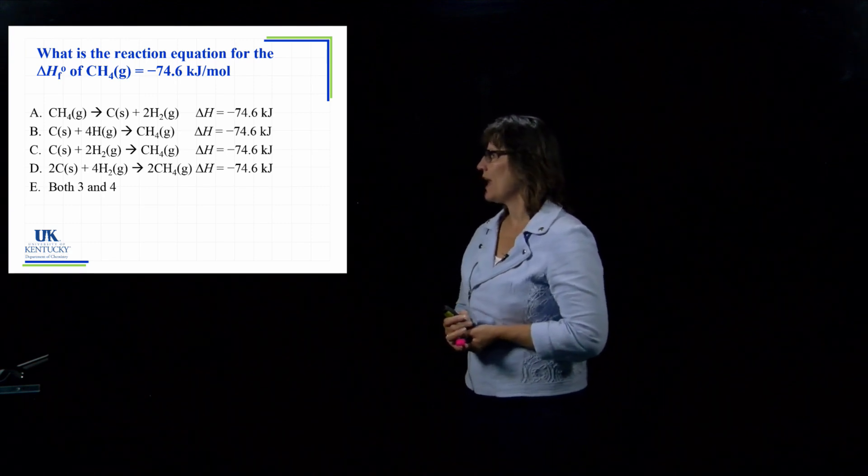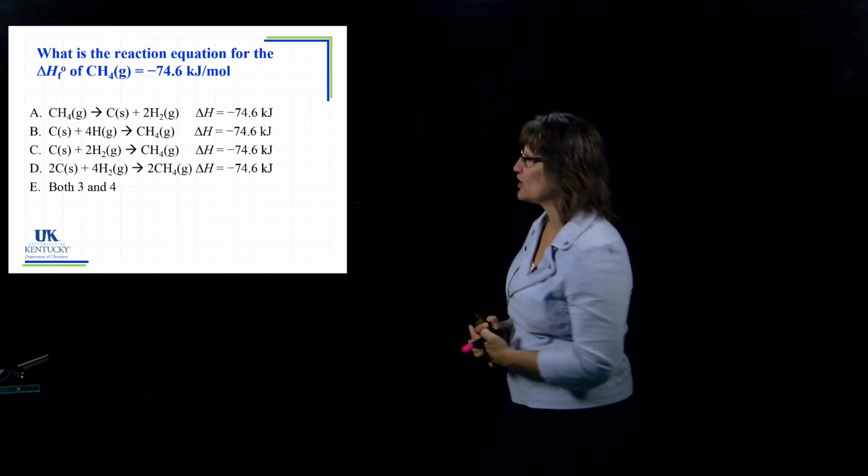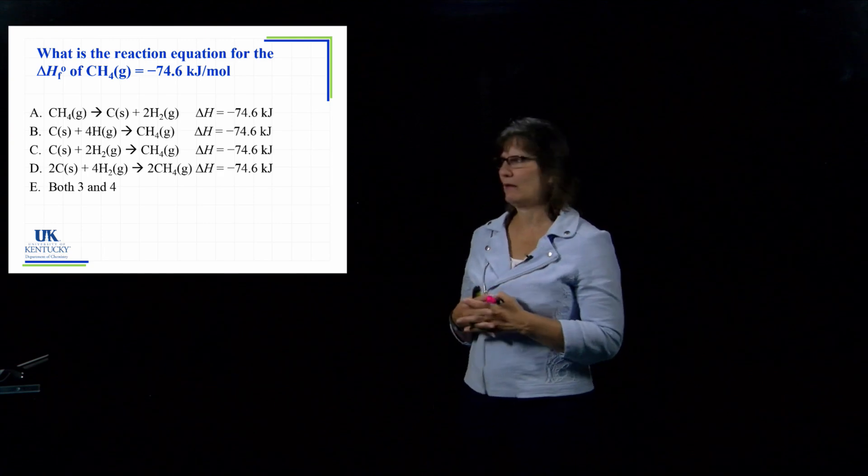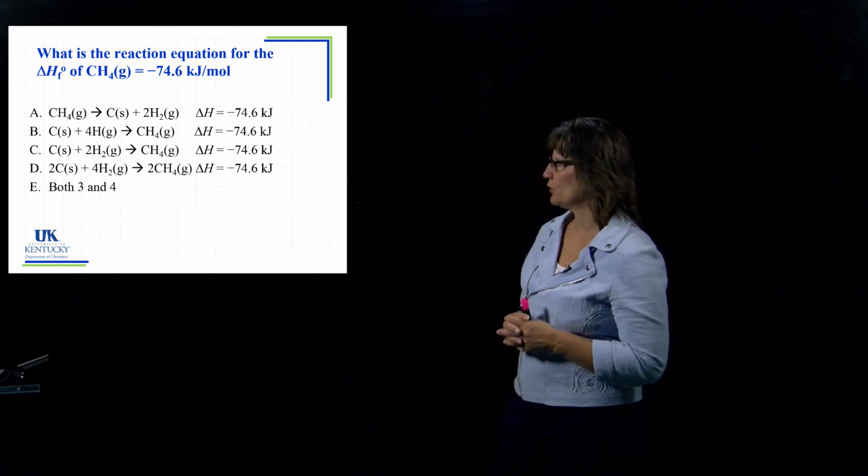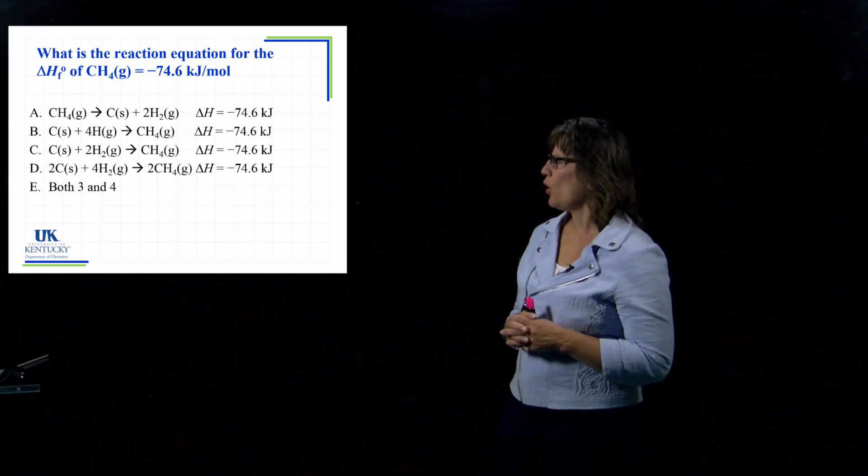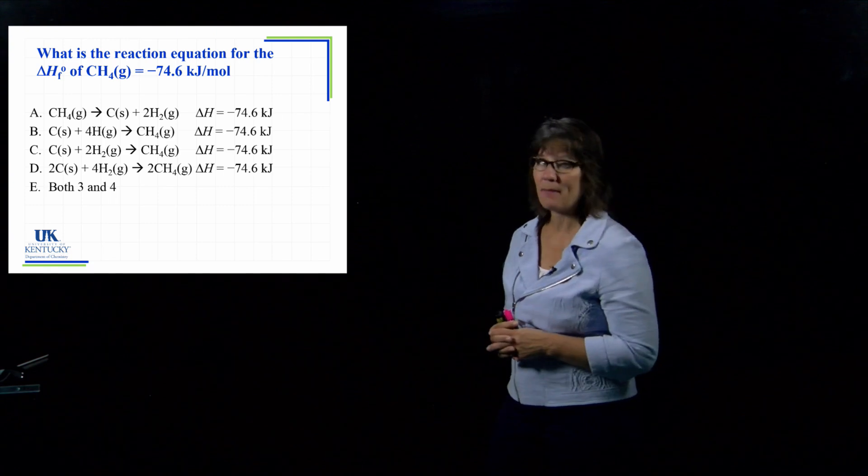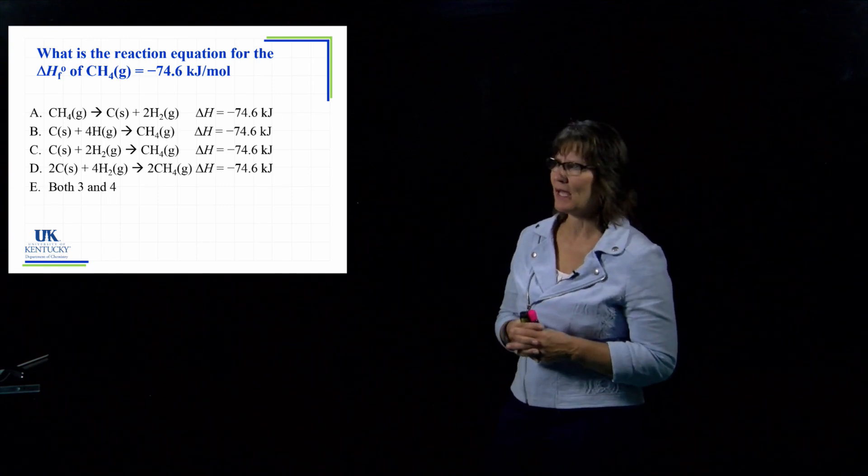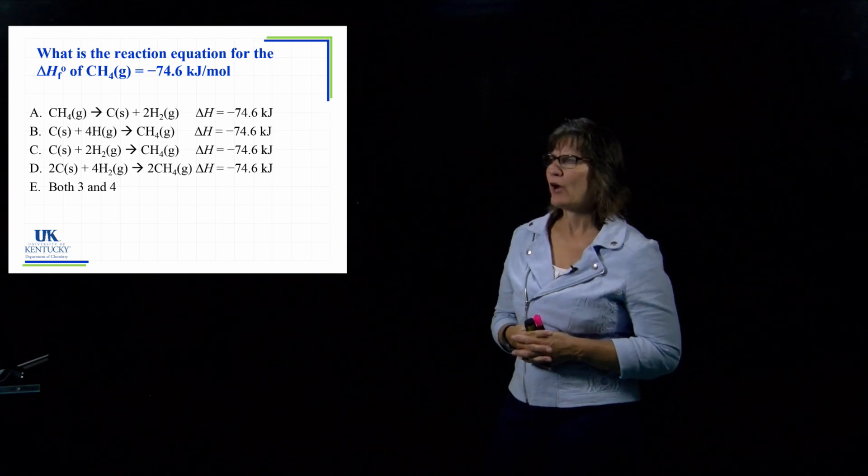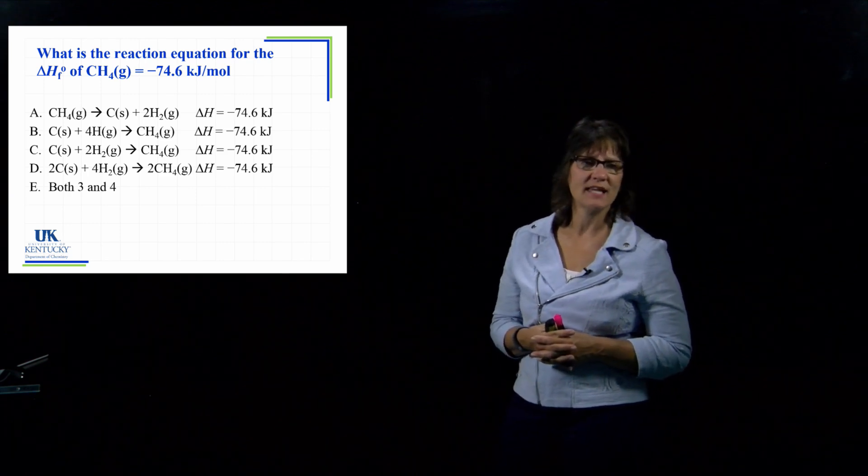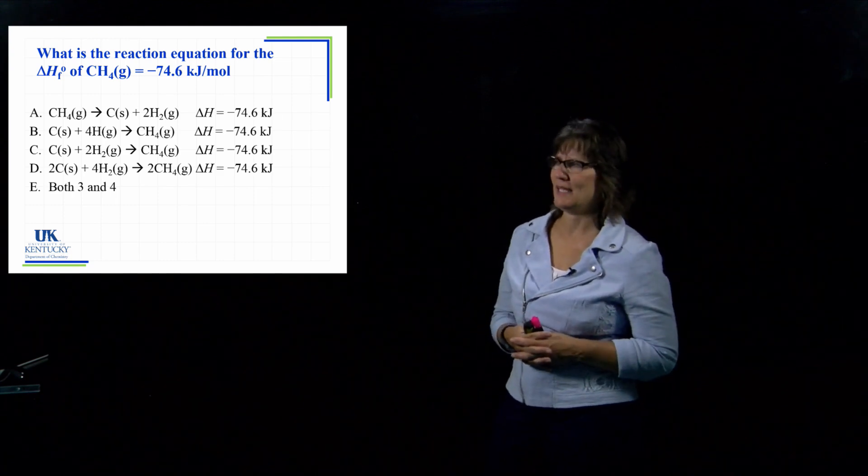We should have come up with answer. Now, I didn't put the GR. Carbon graphite is a solid and I just put the S. So you might have said, but none of them are right because I don't see a GR. But it is a solid, so that's what's written here. Making one mole of the product. Well, I can eliminate A because it is not making a mole of the product. It is making the product as a reactant. So we cross off A. I cross off D because it's not making one mole of CH4. It's making two moles of CH4. So it can't be D.